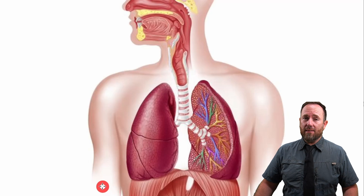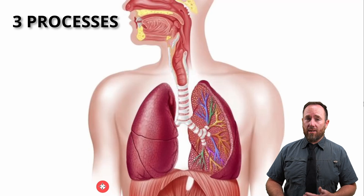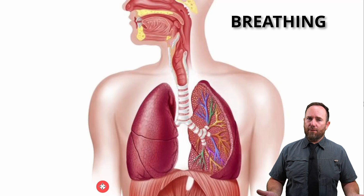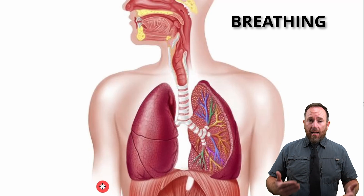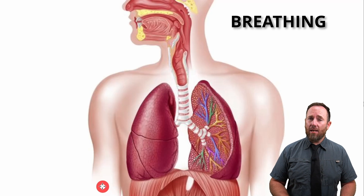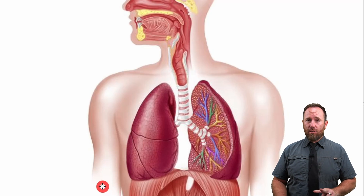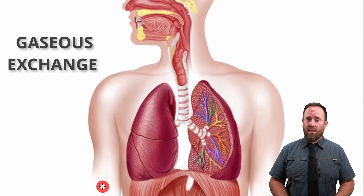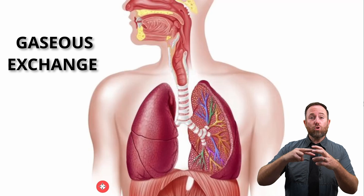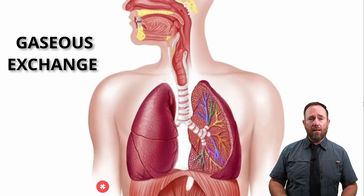There are three processes in which the respiratory system works together. The first is called breathing — simply the physical inhaling and exhaling of air. Note: air is a combination of different gases, but only oxygen and carbon dioxide get swapped out. The next process is gaseous exchange, which happens in your alveoli where oxygen goes into the blood and carbon dioxide comes out.